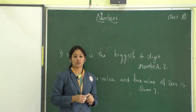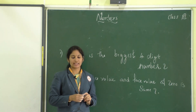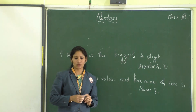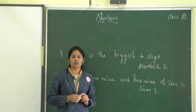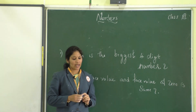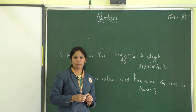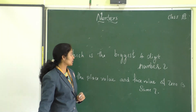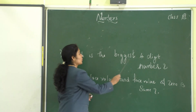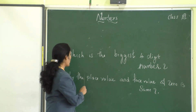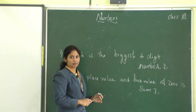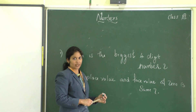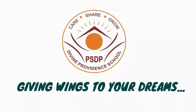Now we have learned about four-digit numbers, place value, face value, standard form, expanded form, and how to read a four-digit number. In the coming class, we will learn more about four-digit numbers. Before winding up, I have two questions for your homework: 1. Which is the biggest four-digit number? 2. Why are the place value and face value of 0 the same? Think about it. We will meet in the next class. Bye, good luck!